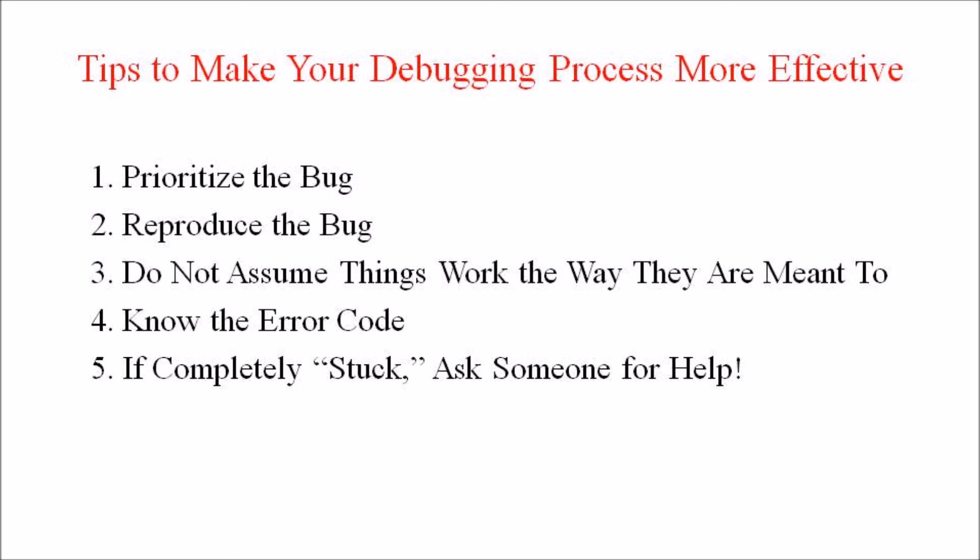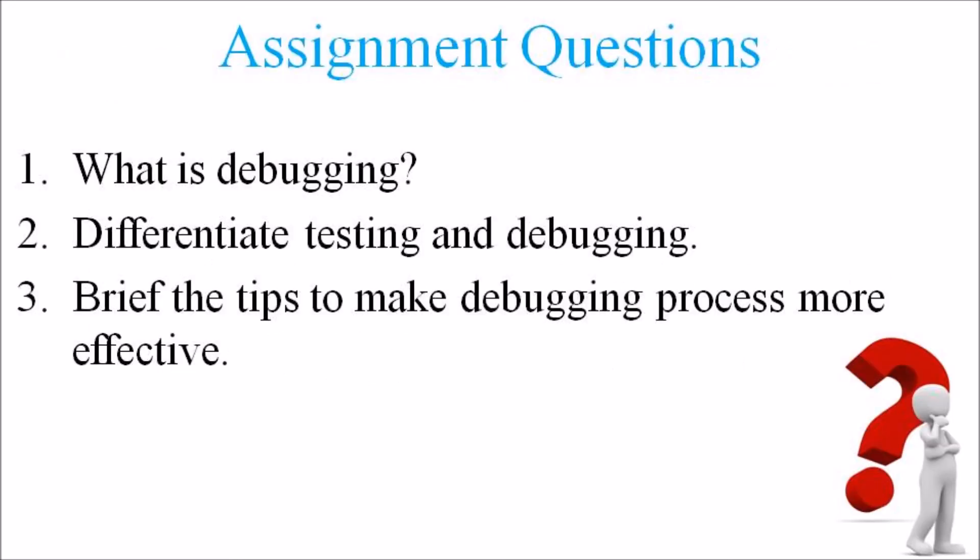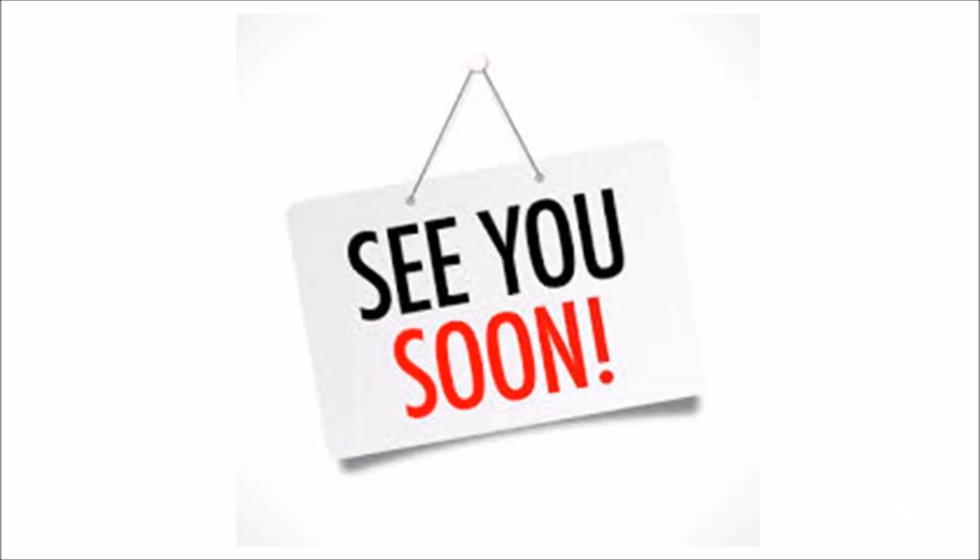These are the major tips that will make the debugging process more effective. Dear students, kindly go through these assignment questions: first, what is debugging? Second, differentiate testing and debugging. Third, briefly describe the tips to make the debugging process more effective. In the upcoming lectures we will discuss software quality assurance matrices. See you soon — until then, goodbye, thank you, and all the best.